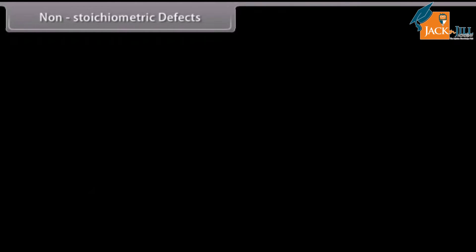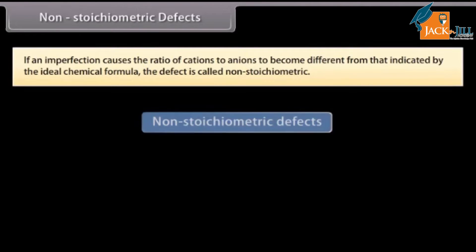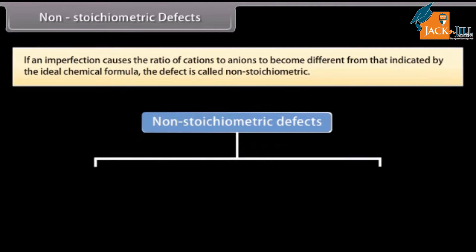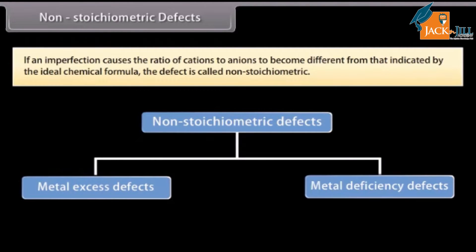Non-stoichiometric defects: If an imperfection causes the ratio of cations to anions to become different from that indicated by the ideal chemical formula, the defect is called non-stoichiometric. These are of two types: metal excess and metal deficiency.